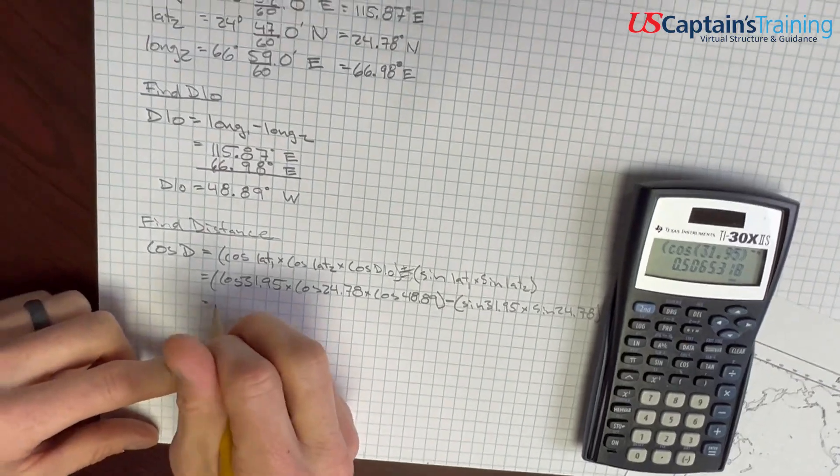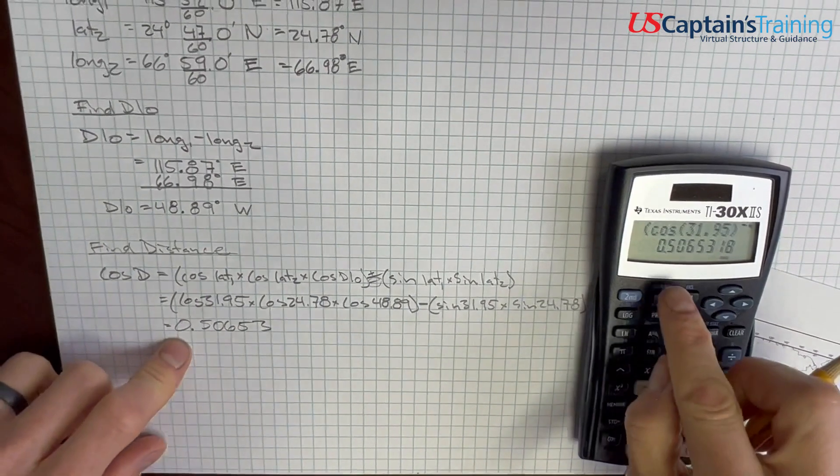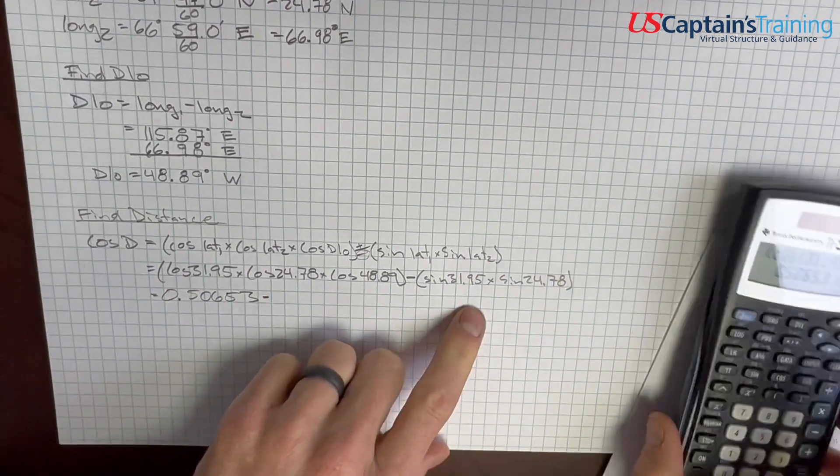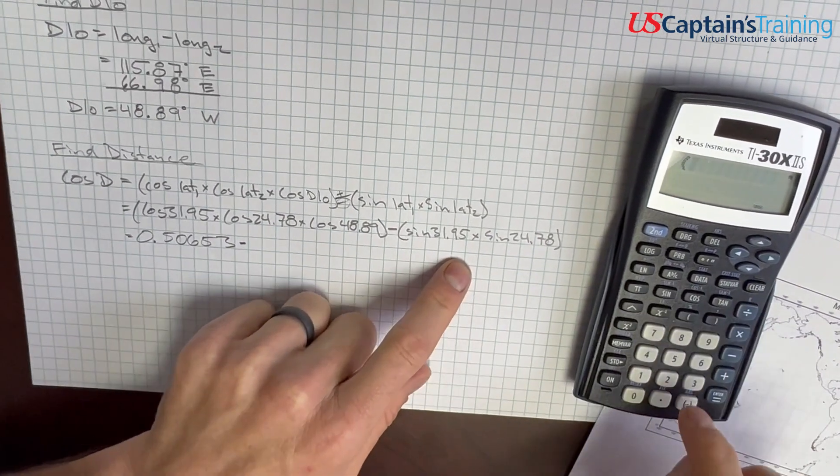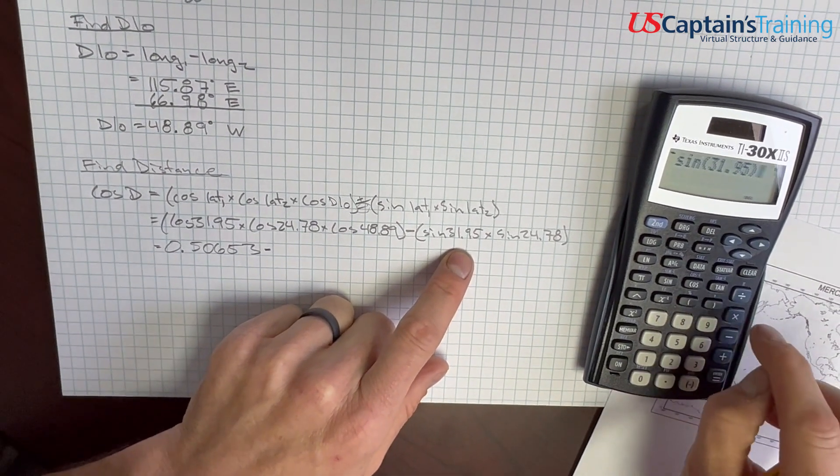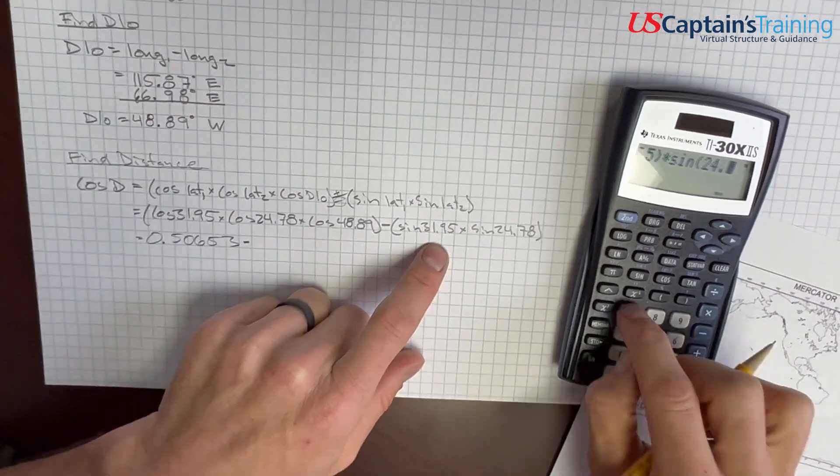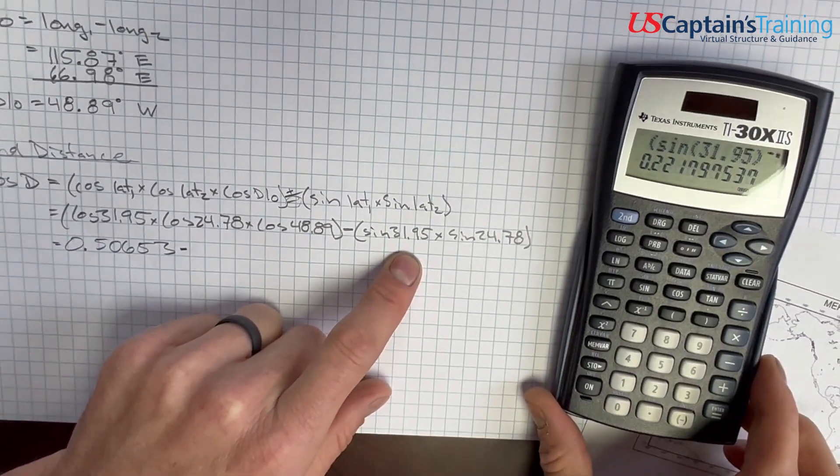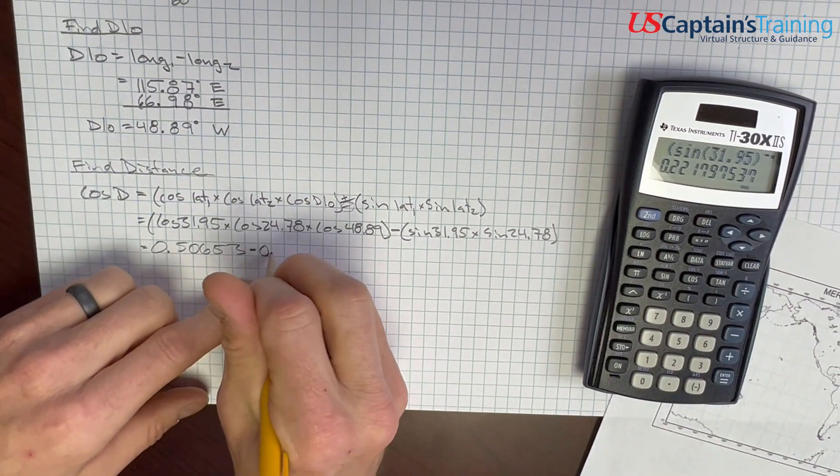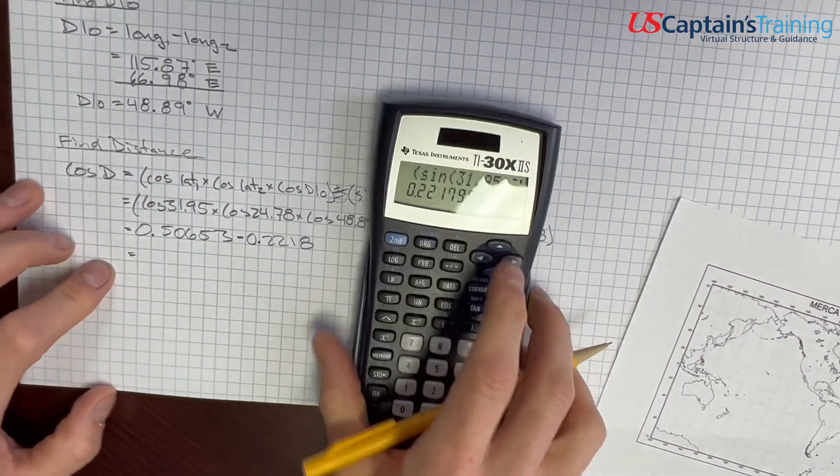0.50653. I'm going to check that. 0.50653. Good. And we are minus, because we crossed the equator. And we'll crunch these in. So, we open these parentheses and say, sine 31.95 close, times, sine 24.78 close, close, enter, 0.2218. And we do this subtraction.